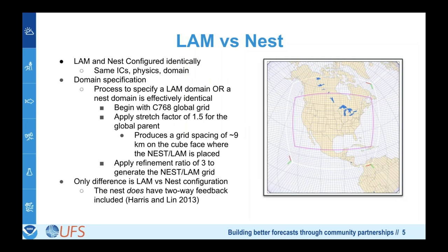Now we compare the limited area configuration with the nested configuration. We set up a limited area configuration covering a domain shown in the pink box, and configured a nested run with the global model over the same area. The global grid uses a stretch factor of 1.5 via a Schmidt transformation for refinement over CONUS, then an additional refinement ratio of three to get from nine kilometers down to three kilometers for the nest and limited area model grid centered over CONUS.